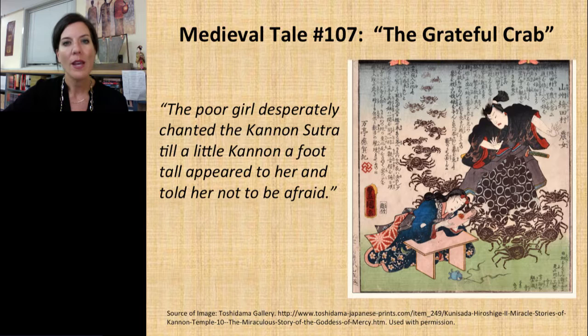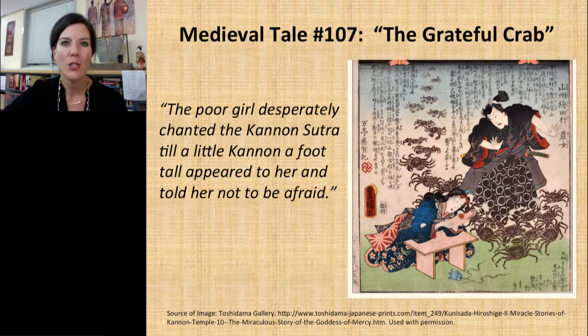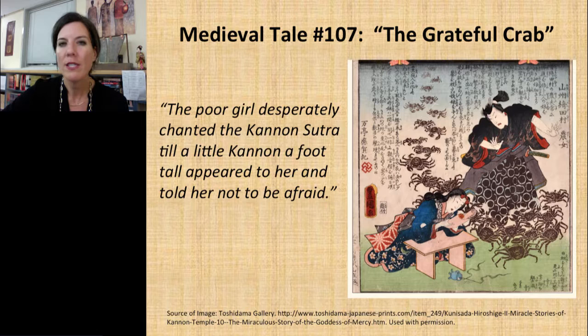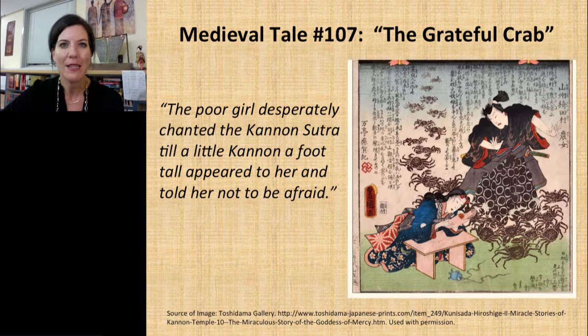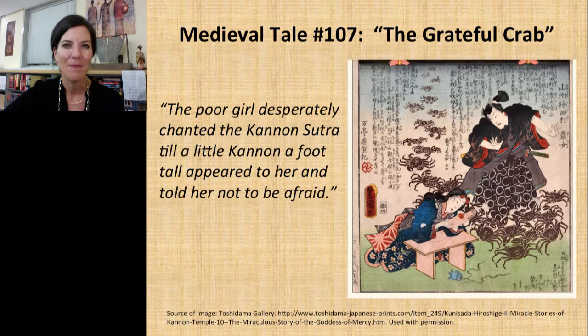The father manages to get the snake to go away, saying 'Let's come back in a few days,' giving him time to prepare his daughter for what's about to happen. A few days later, the snake comes back and goes straight for the man's daughter. The snake slithers into her room and beats on the door with its tail. All the while, the poor girl is desperately chanting the Kannon sutra. A little Kannon, about a foot tall, appears to the girl and says, 'Don't be afraid. Don't worry.' The tale ends quite beautifully — in the middle of the night, hundreds of crabs invade the house, attack the snake, and tear it to pieces. Remember that crab the girl took pity on in the beginning? Her compassion for that crab is exactly what ended up saving her in the end.